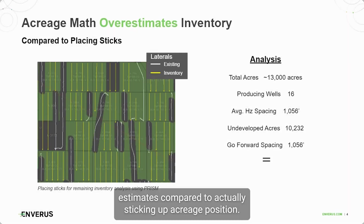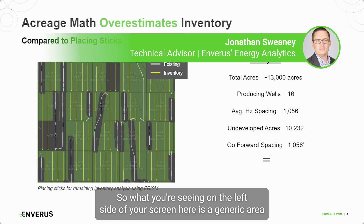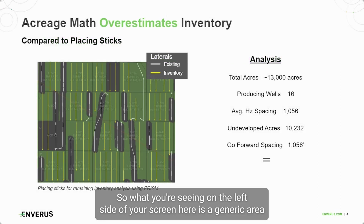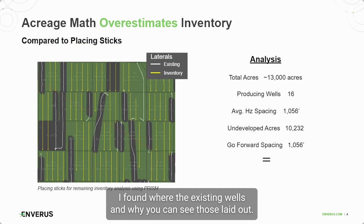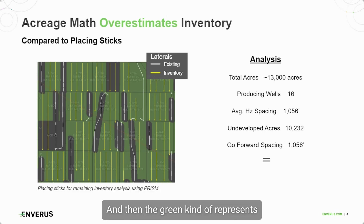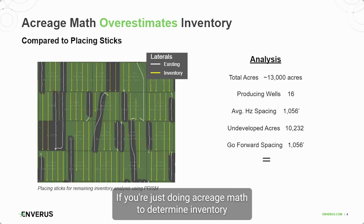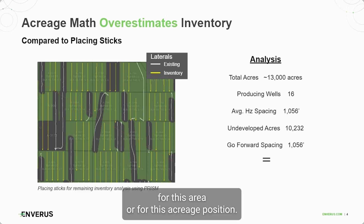This is a comparison of acreage math estimates versus actually sticking up an acreage position. On the left side of the screen, this is a generic area where the existing wells shown in white are laid out, the inventory sticks being placed are in yellow, and the green represents the acreage that would be taken into account if you're just doing acreage math to determine inventory for this area.